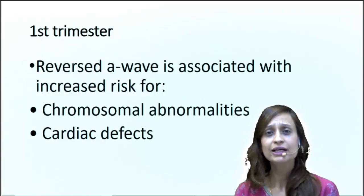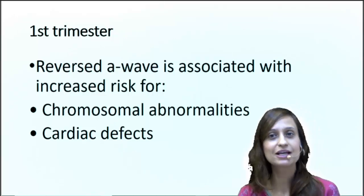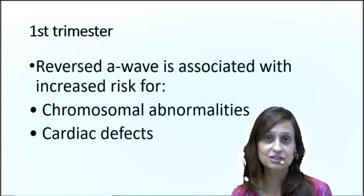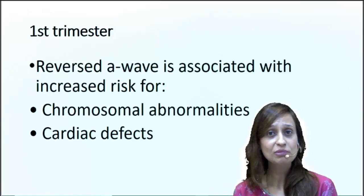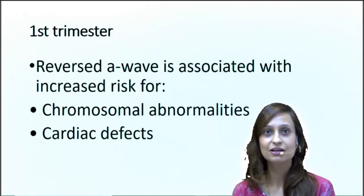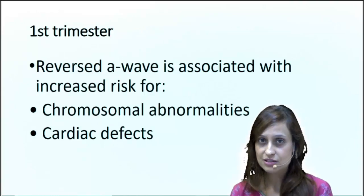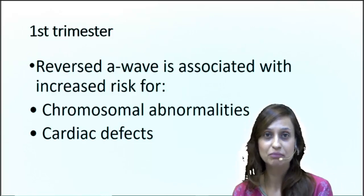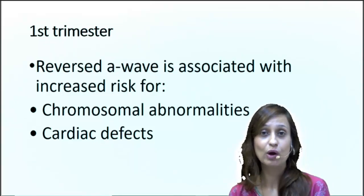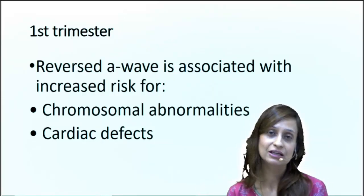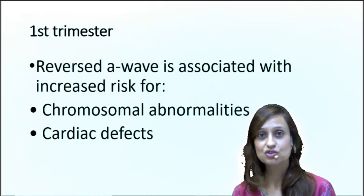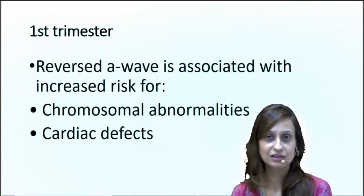This reversal has significance both in the first trimester and the later part of pregnancy. In the first trimester, reversal of the A wave is usually associated with chromosomal abnormalities, although it could be a normal finding in up to 80% of pregnant women. It becomes significant when the reversal of the A wave is seen together with increased nuchal translucency, which most likely indicates chromosomal abnormalities — the highest association is with trisomy 21 (Down syndrome), followed by trisomy 18, then trisomy 13. Similarly, this reversal is also associated with cardiac defects in the fetus, making it an indication to look for fetal echocardiography.